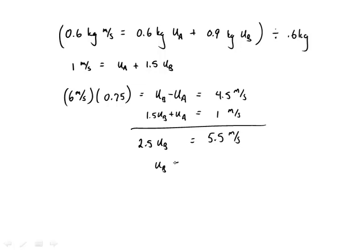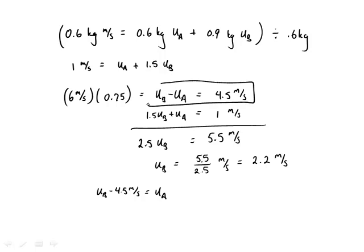So u_b equals 5.5 over 2.5 meters per second, which is 2.2 meters per second. And if u_b is 2.2 meters per second, u_b minus 4.5 meters per second equals u_a. That's from this equation right here. And so u_a equals 2.2 meters per second minus 4.5 meters per second, which is minus 2.3 meters per second. And so in fact, that is moving to the left. Particle a has bounced back the other direction.